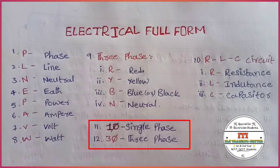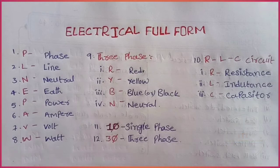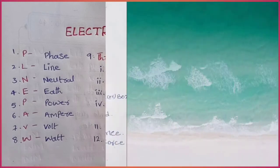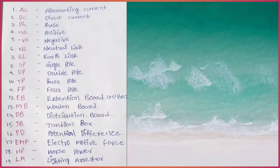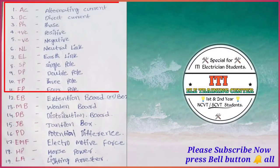Single phase, 3 phase. AC: alternating current. DC: direct current. Phase: positive, negative. NL: neutral link. EL: earth link.